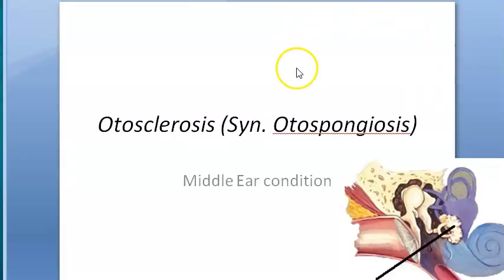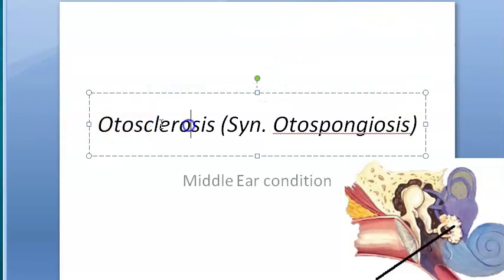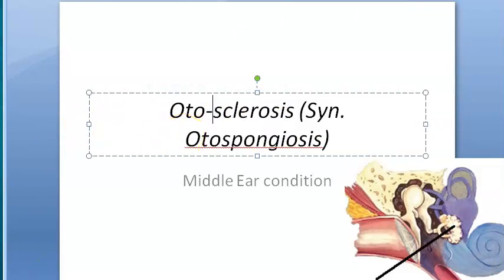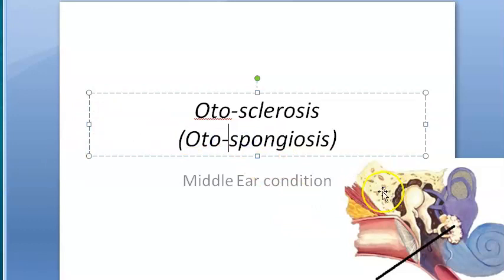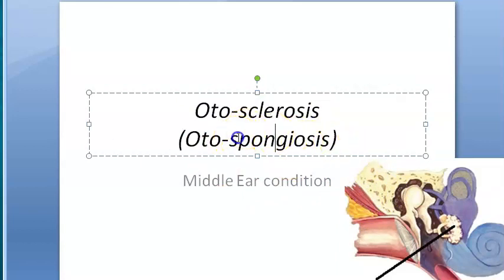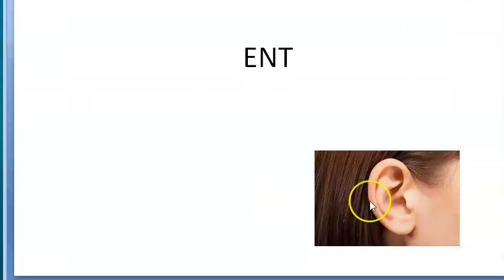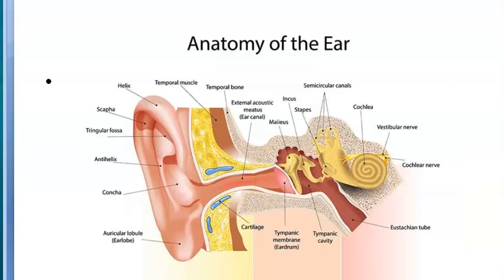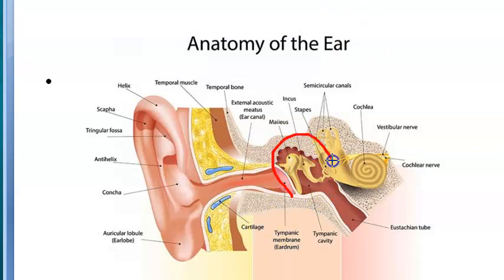In this video we want to look at otosclerosis, also called otospongiosis. 'Oto' refers to the ear, so some hardening or spongy bone formation is happening in the ear. The middle ear extends from the eardrum to the stapes.